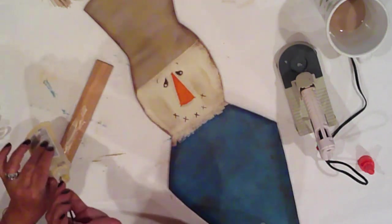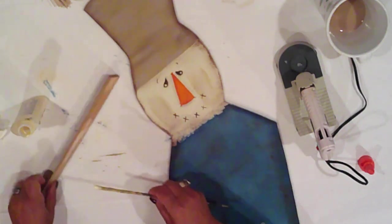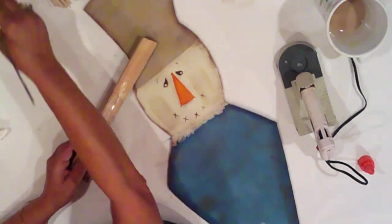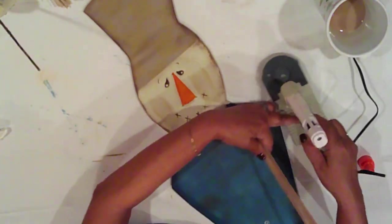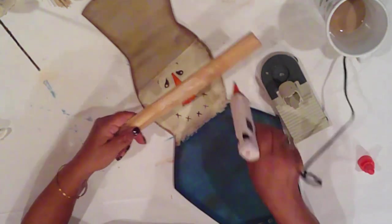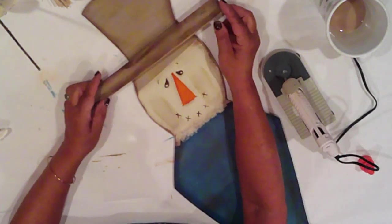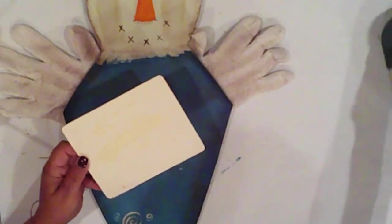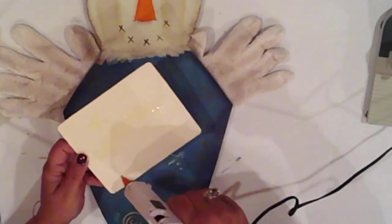With some wood glue and some hot glue, I'll attach the brim to his head. And I'll attach his wee sign.